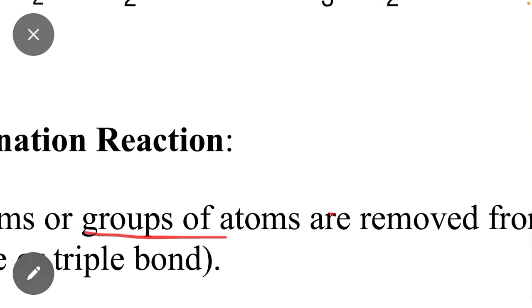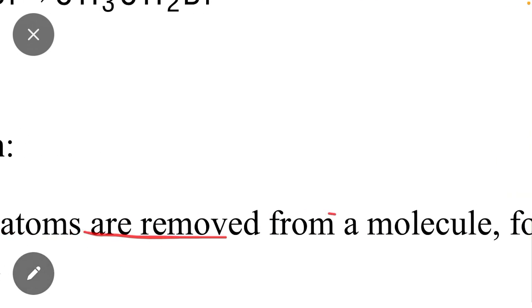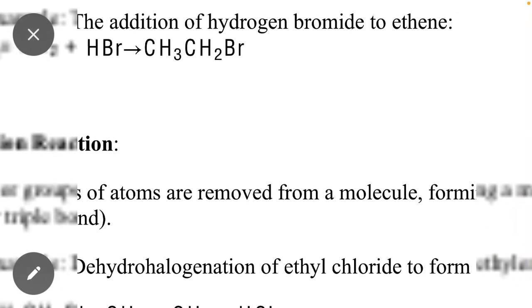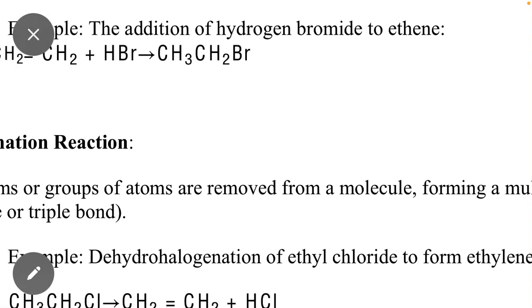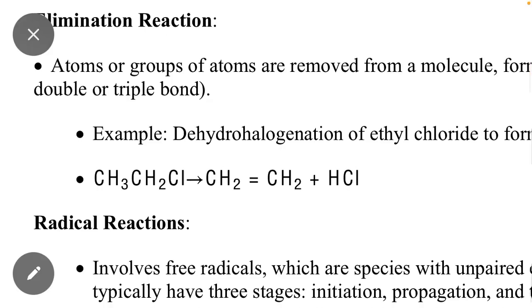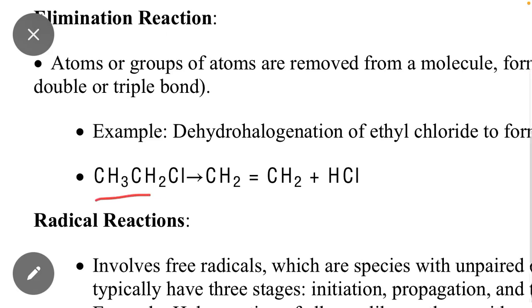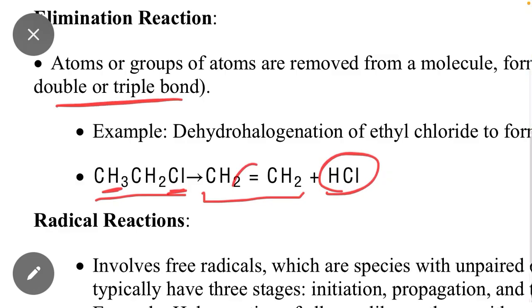Next is elimination reaction, where atoms or groups of atoms are removed from a molecule. Two atoms are removed from one molecule, and as a result a double bond or triple bond is formed. For example, in ethyl chloride (CH3CH2Cl), when we remove one hydrogen and one Cl, HCl is eliminated and the product is ethene, which contains a double bond.